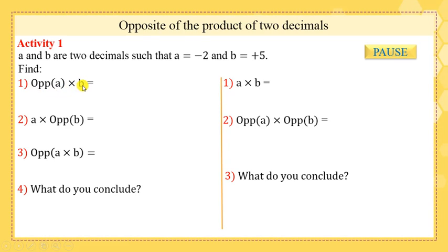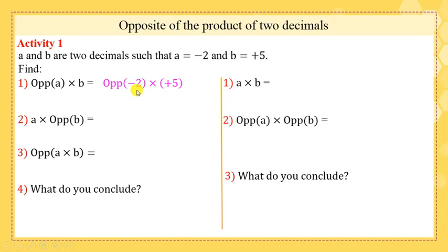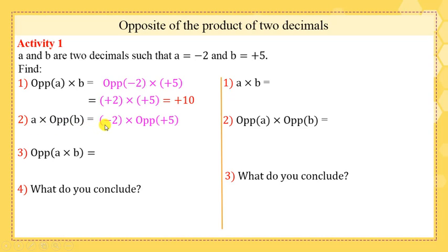Okay, first to find opposite of (a × b), we substitute a and b by their numerical values. We write opposite of (negative 2 × positive 5). The opposite of negative 2 is positive 2. The product of 2 numbers having the same sign is positive, so positive 2 × positive 5 equals positive 10.